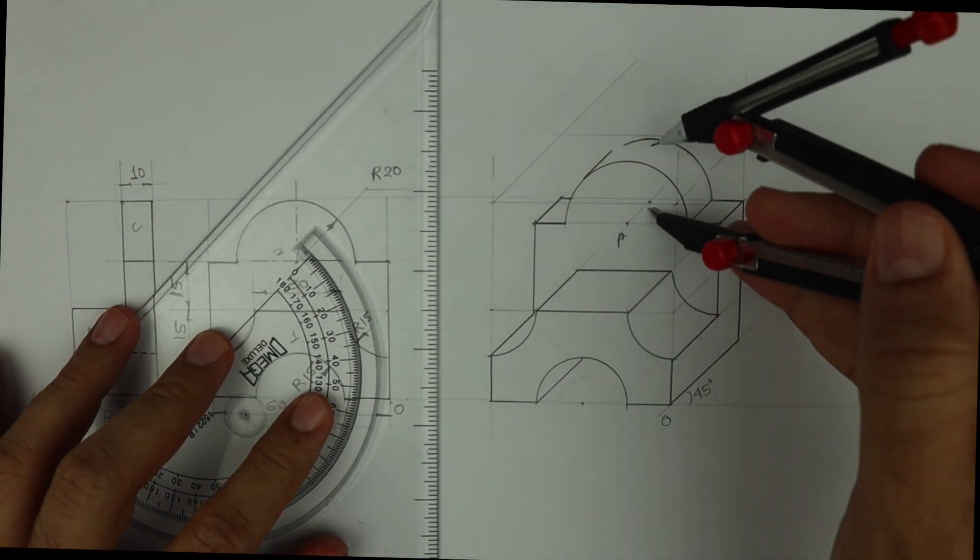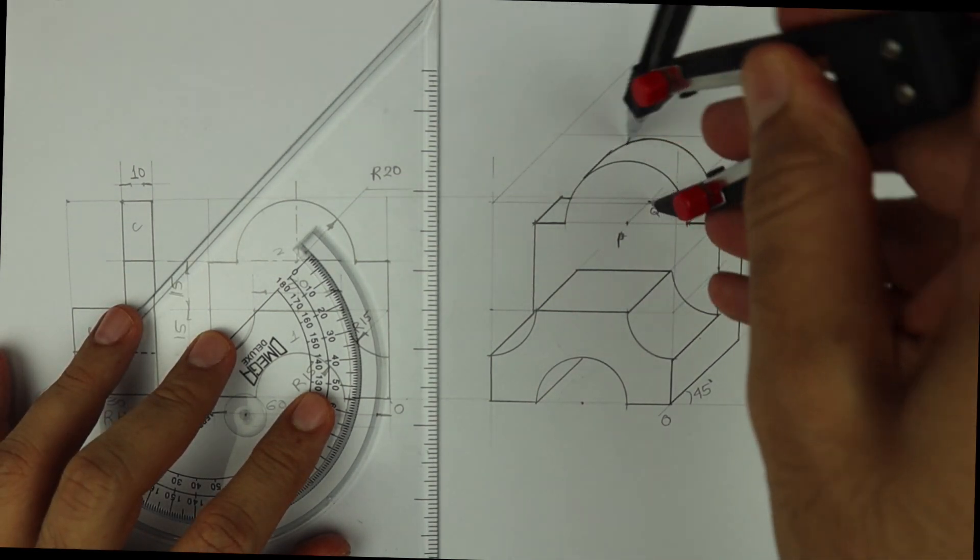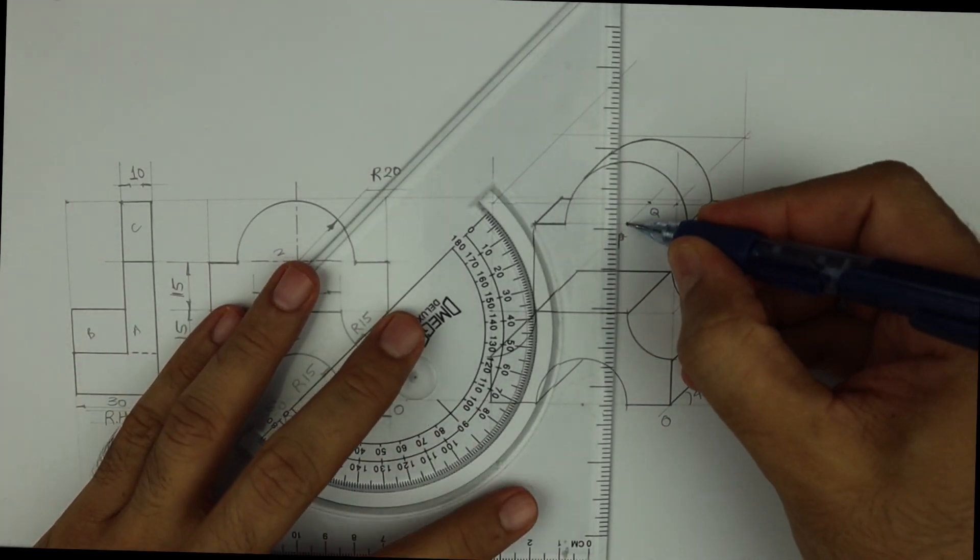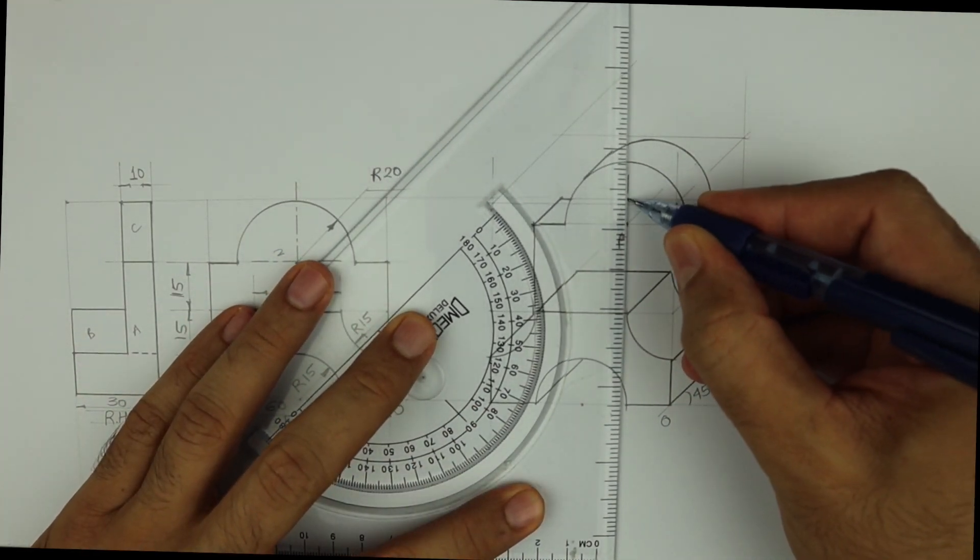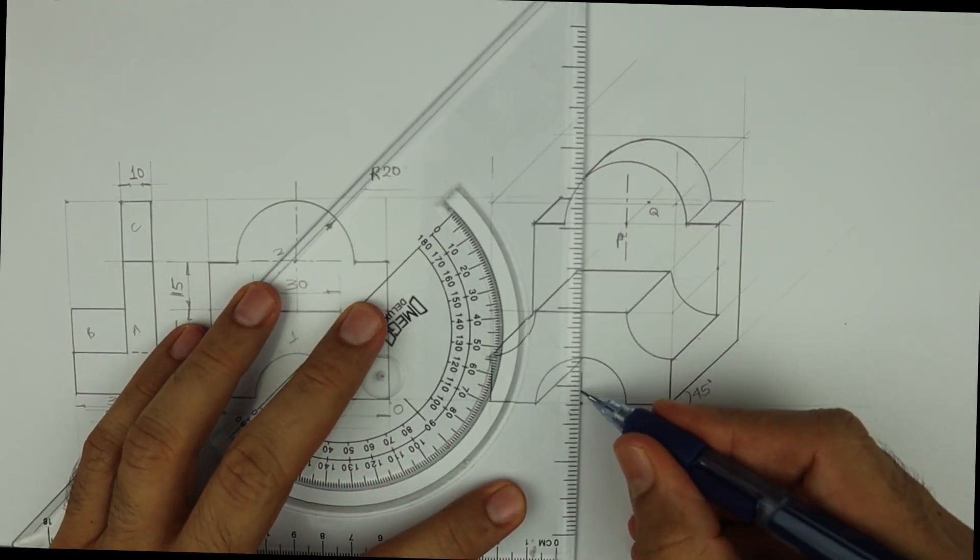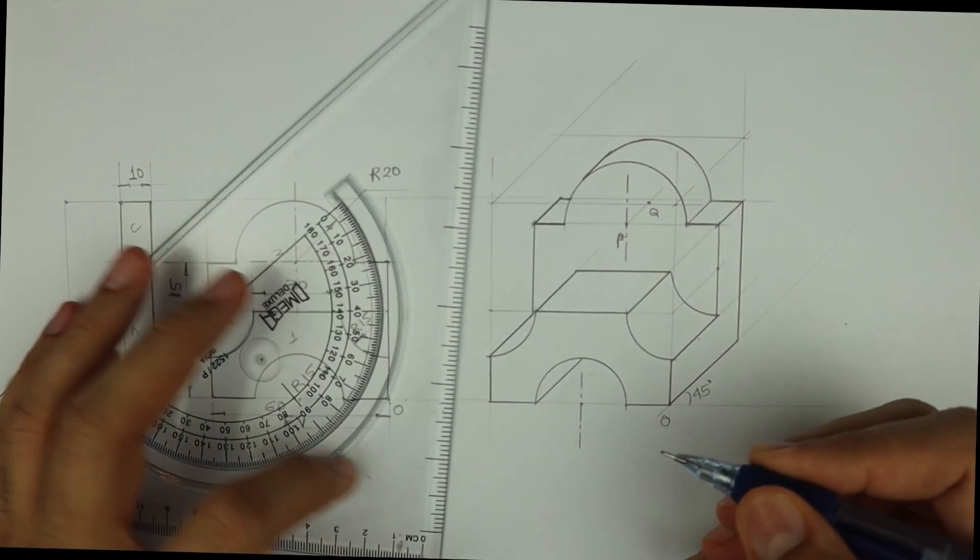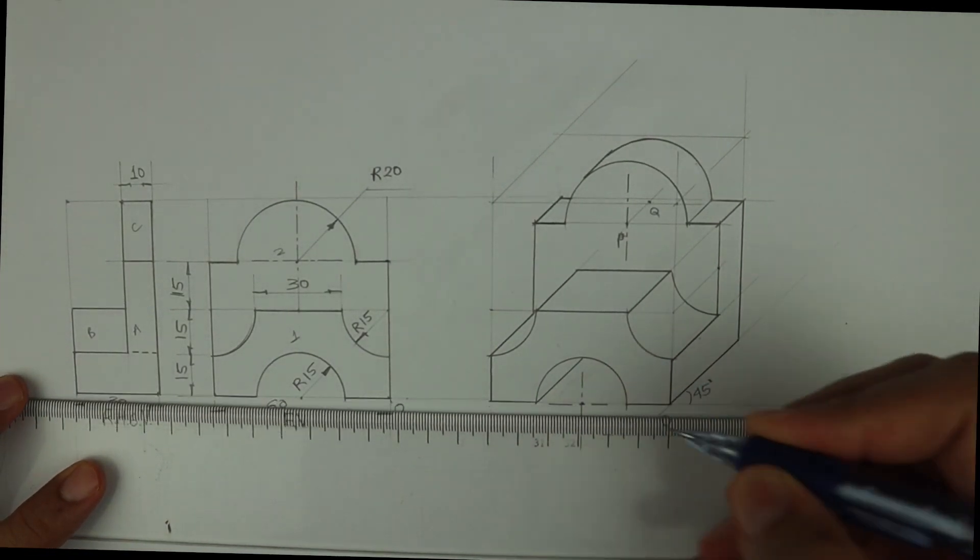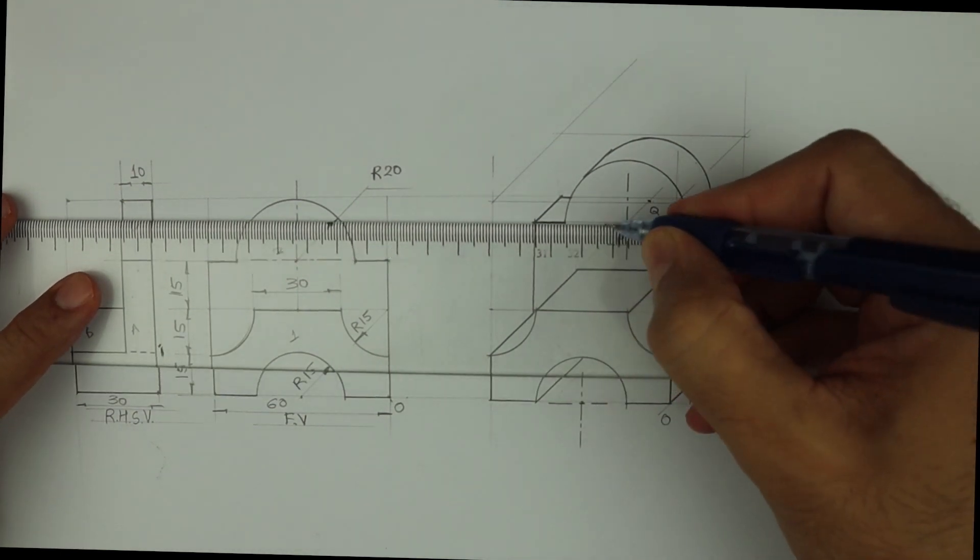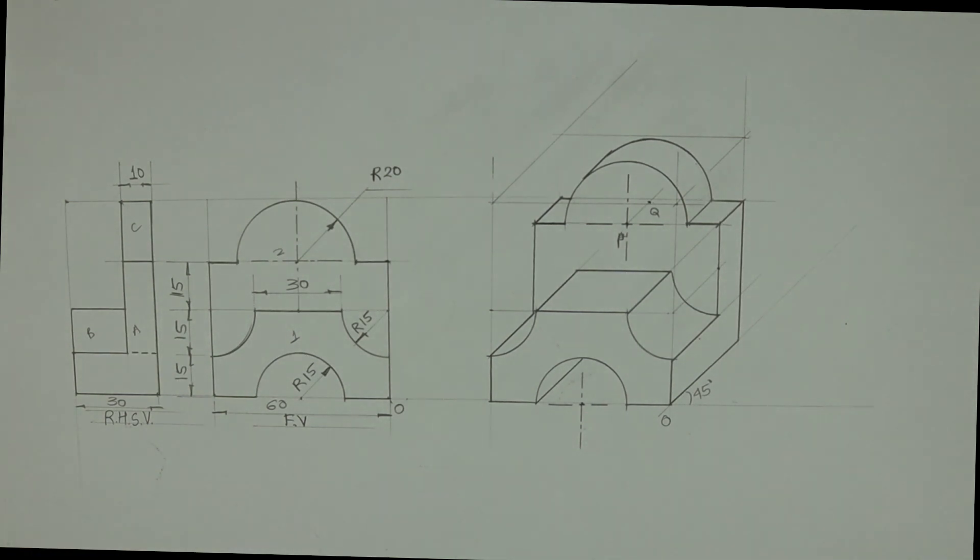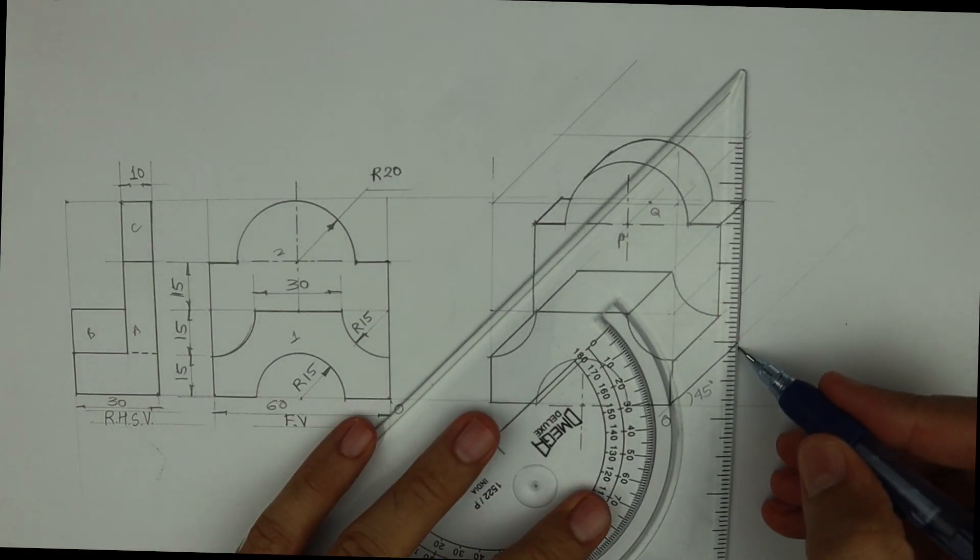And then you draw tangent. From P you can draw axis line. So wherever you have circle, over there you need to draw axis line to show center. And you can do dimensioning.